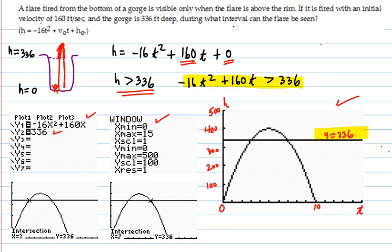When is it going to be able to be seen? When the graph is greater than the 336 line, which is all these points here are where it is visible. And so the question is, where do those points correspond to as far as time values?